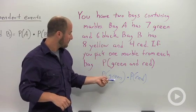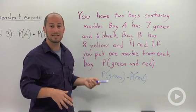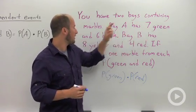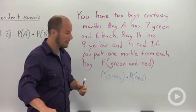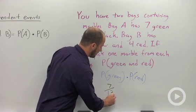So probability of choosing a green. The only greens we have are in bag A. So we just need to find the probability of taking a green out of bag A. There are seven green and six black. So that tells me there are seven green and 13 total. So the probability is just going to be seven out of 13.